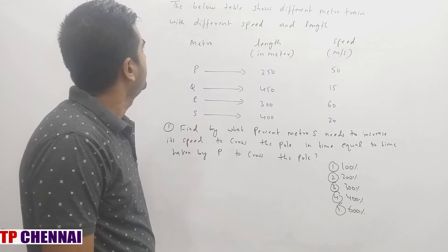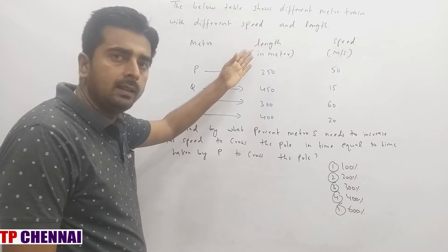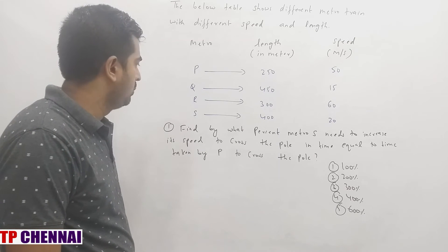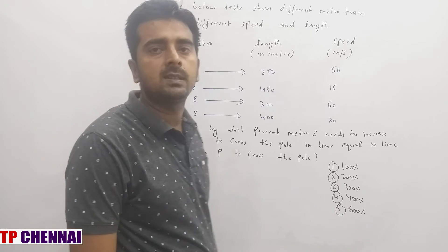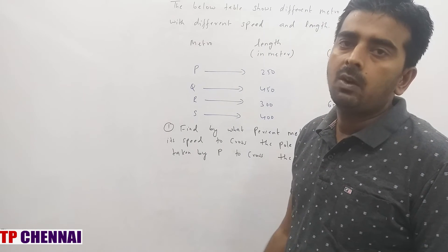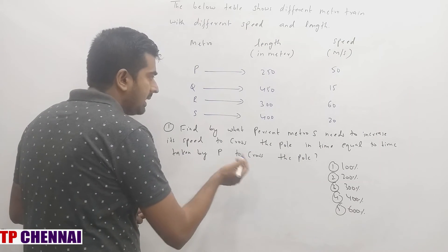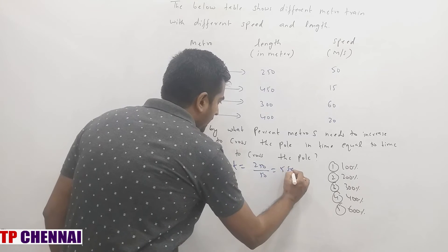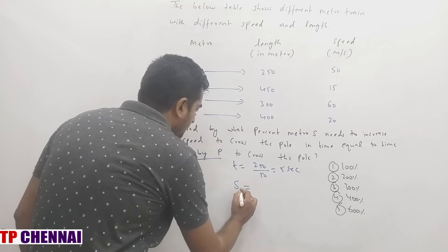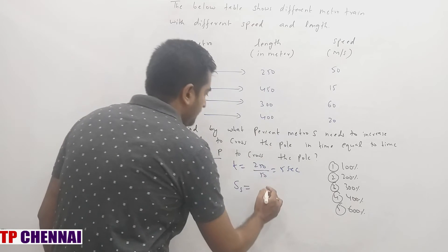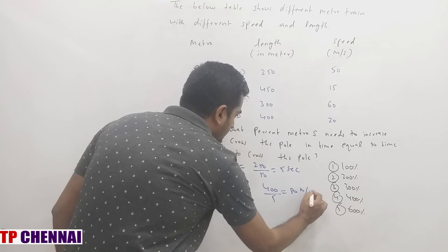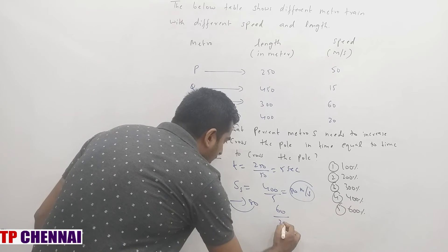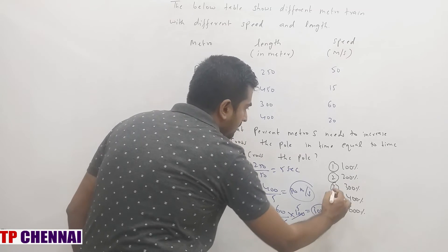Now, one set of DI: the table shows different metro trains P, Q, R, S, T with different speeds and lengths. First DI question: By what percent does metro S need to increase its speed to cross a pole in the same time as metro T? When a train crosses a pole, distance = length of train. Time for T to cross pole = 250/50 = 5 seconds. For S to also take 5 seconds: speed of S = 400/5 = 80 m/s. Current speed of S is 20, so increase = 60/20×100 = 300%, which is the third option.